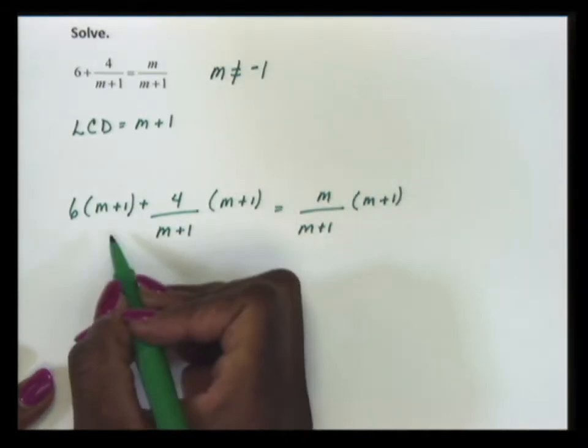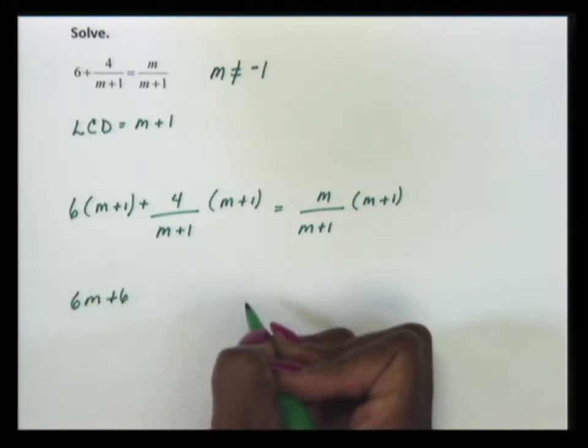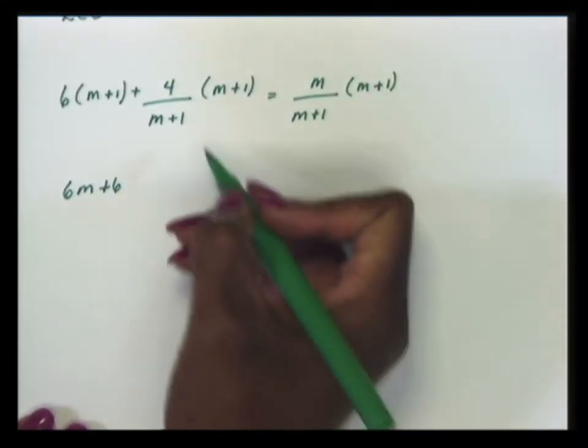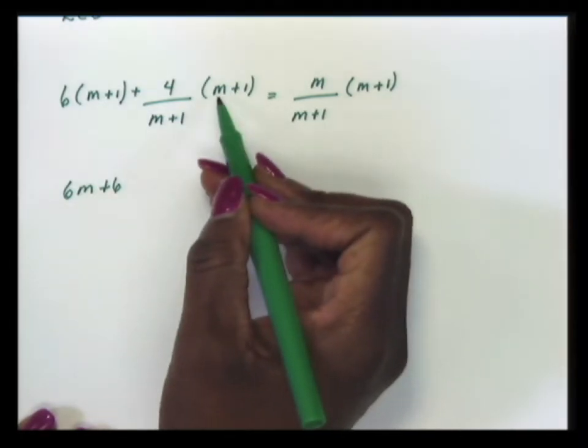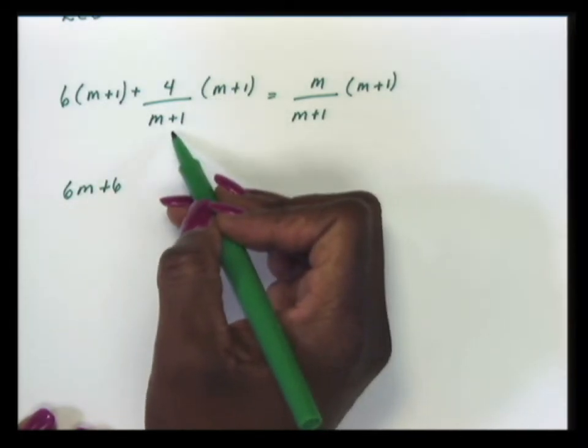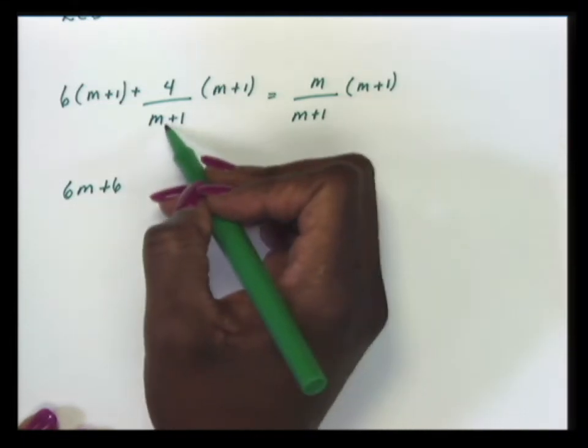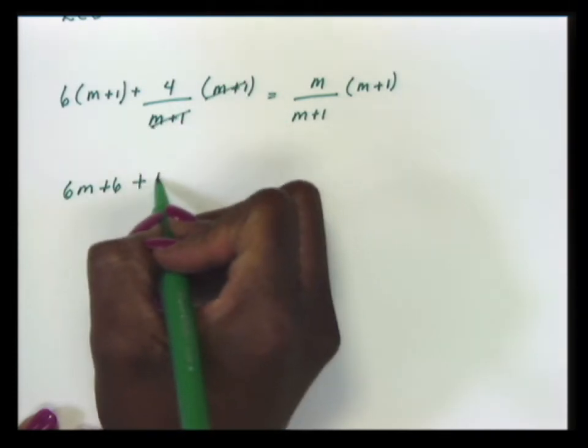The first term, we distribute the 6. We have 6m plus 6. The second term on the left, we have 4 over m plus 1 in our denominator and we're multiplying by m plus 1. So our m plus 1s cancel. We're left with just the 4, positive 4.